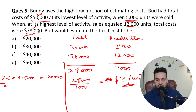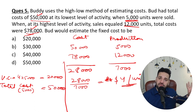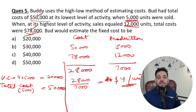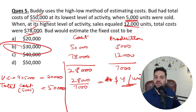For producing 5,000 units, the total cost is 50,000. Total cost equals fixed cost plus variable cost. Variable cost is 20,000, so 50,000 minus 20,000 = 30,000. 30,000 is your fixed cost — option B is the correct answer.